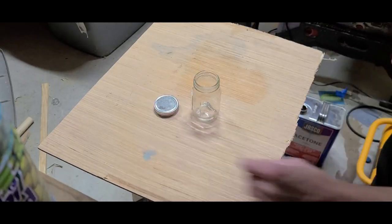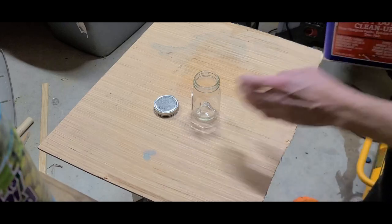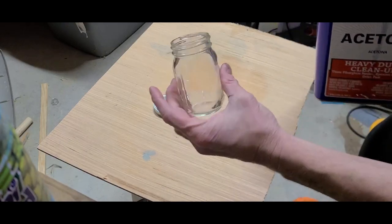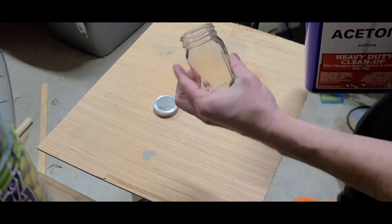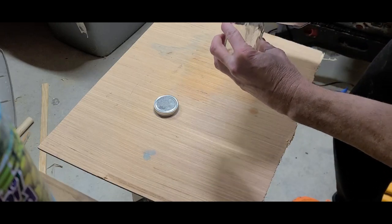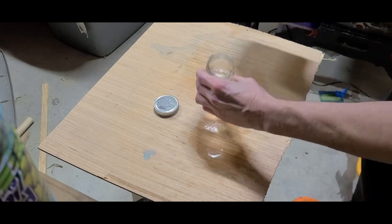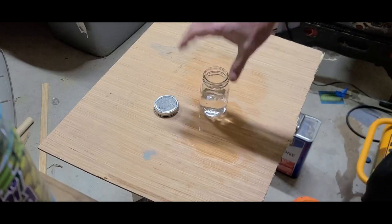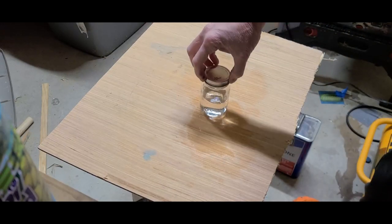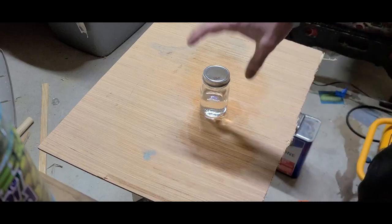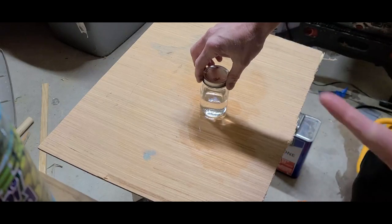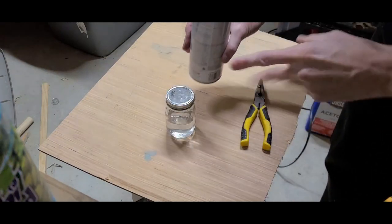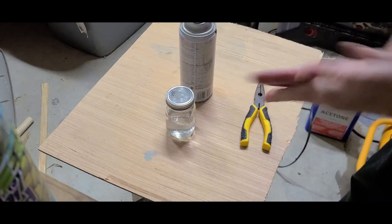Acetone will chew through plastic way faster than you think. What you can do is get these little glass bottles. These are fantastic, you can get them at Walmart and I'll put a link to them. Put a little bit of acetone in one of these glass bottles and you can just hold on to this indefinitely because it'll last forever as long as you have a good top and it's in a glass container.